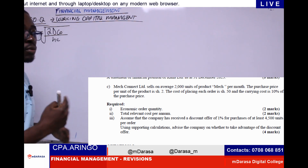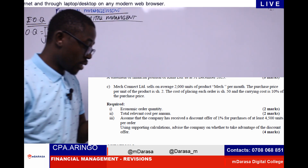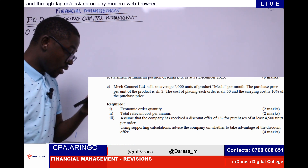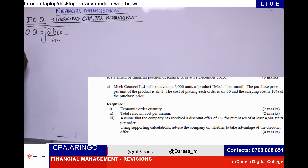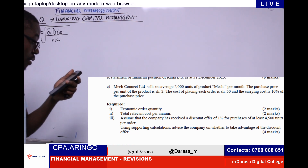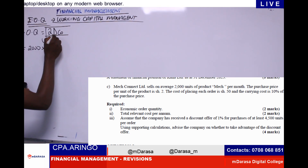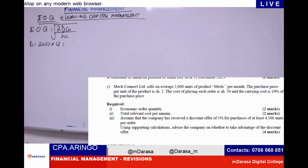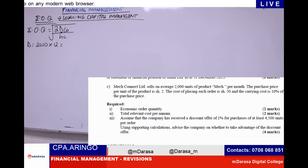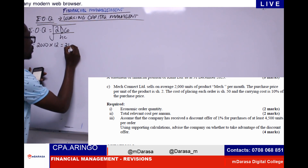After the formula, it is important to identify the variables given. Number one, we have our annual demand — we are told MEC Connect Limited sells on average 2,000 units of product MEC per month. So our demand is 2,000 units per month. That is per month — that is where the catch is. We need to determine the full year because B stands for annual demand. So we take 2,000 by 12 to give us 24,000 units per annum.